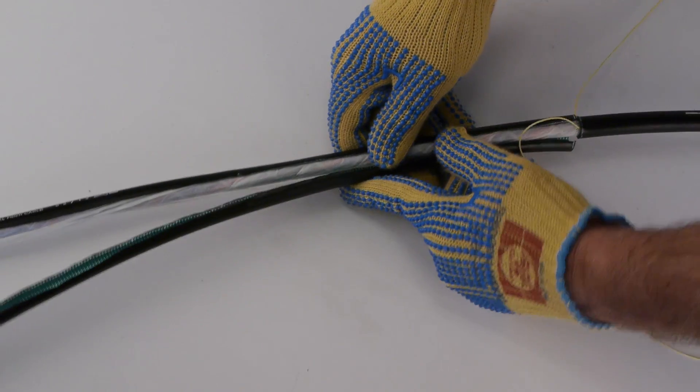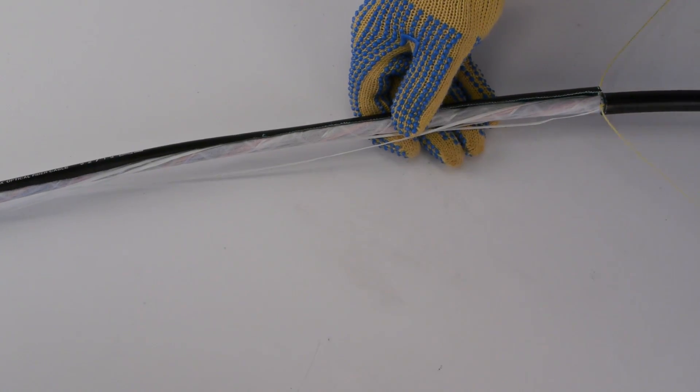Remove the jacket material to expose the cable core. For single rip cord cables, gently pull the cable core through the opening created by the rip cord. Do not exceed the cable's minimum bend radius.